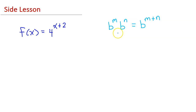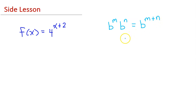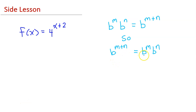We know that b to the m times b to the n is equal to b to the m plus n. But this is true in reverse as well — b to the m plus n will equal b to the m times b to the n.